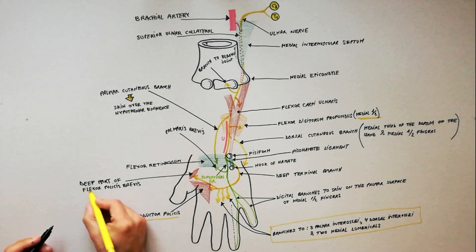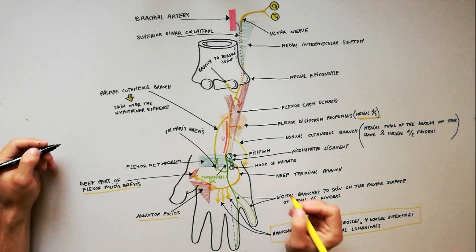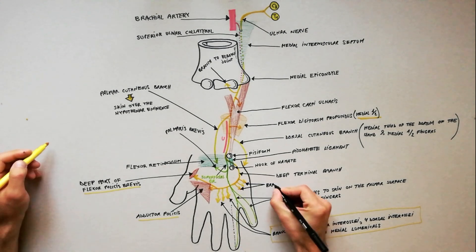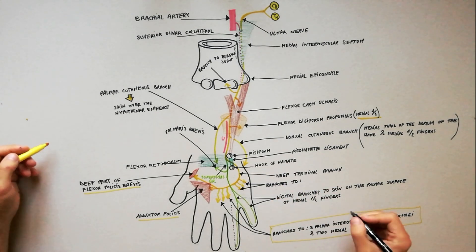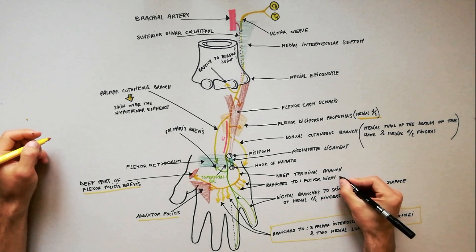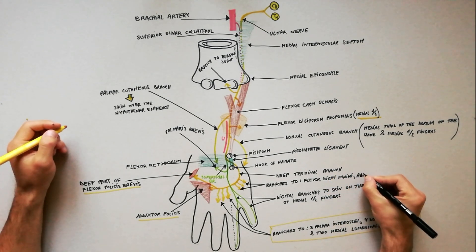Finally, let's not forget that the deep terminal branch of ulnar nerve also gives branches to the muscles of the hypothenar eminence like the flexor digiti minimi and abductor digiti minimi.